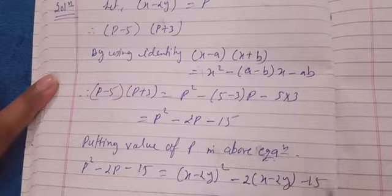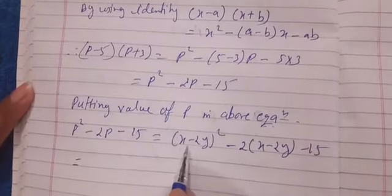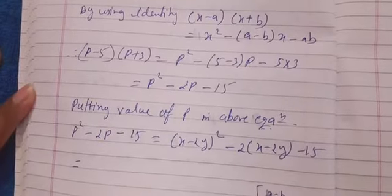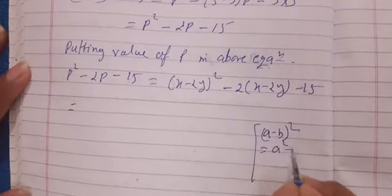So here again we will use a formula, that is (a - b)², we have to show that we are going to use it because there is step marking for these things: a² + b² - 2ab.